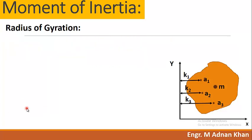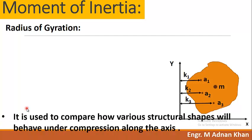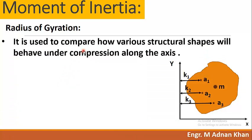Why is radius of gyration important to structural engineers? Every cross-sectional shape has properties measured in certain units, like area and perimeter, which are easily understood by non-engineers. However, radius of gyration is a property that non-engineers don't need to know, but which is critically important to the structural engineer.